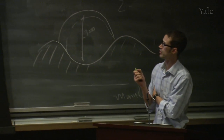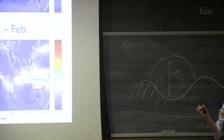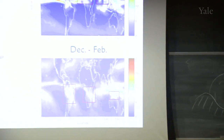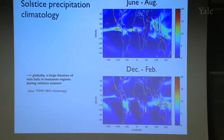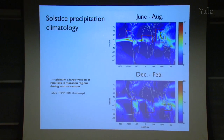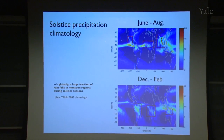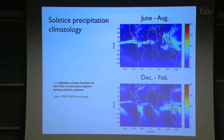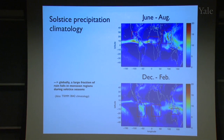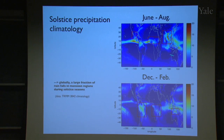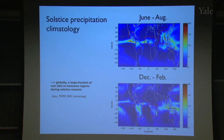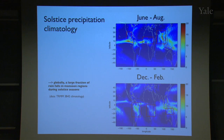I'd like to start off by presenting pictures of what the precipitation distribution looks like on Earth during the Northern Hemisphere and Southern Hemisphere summer seasons.